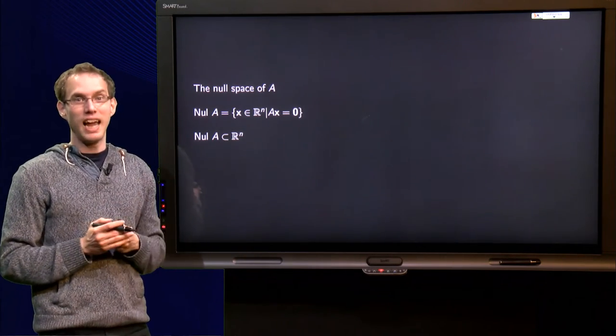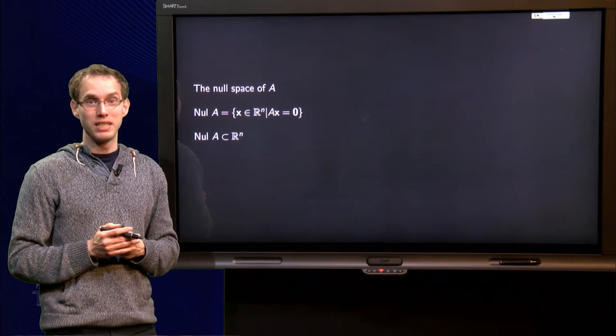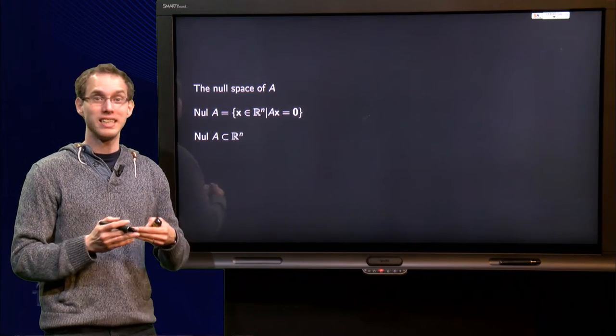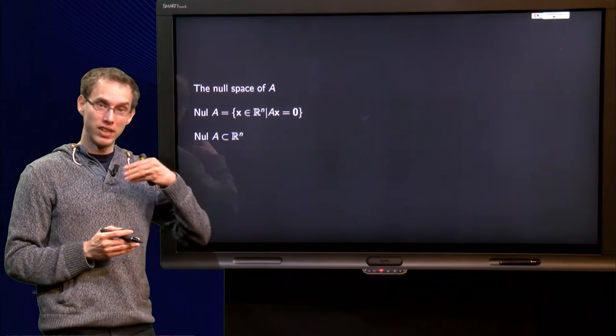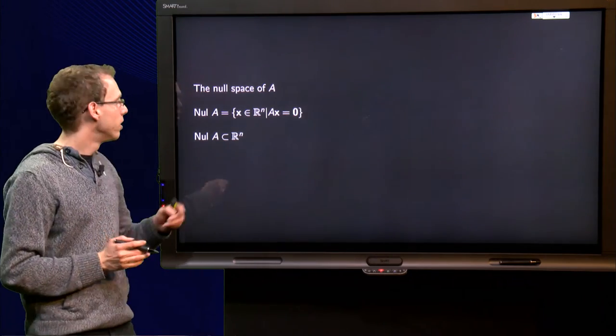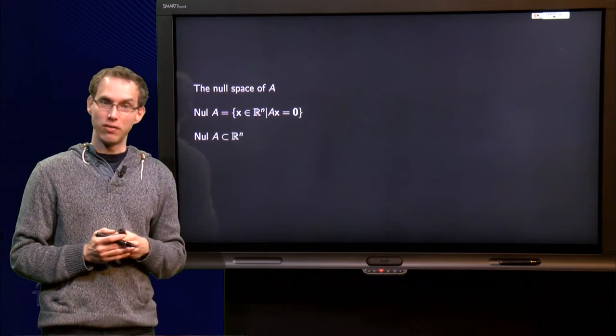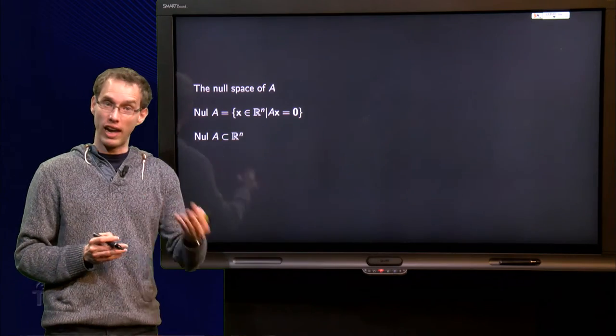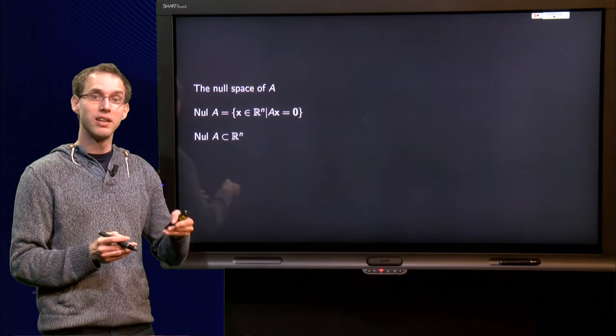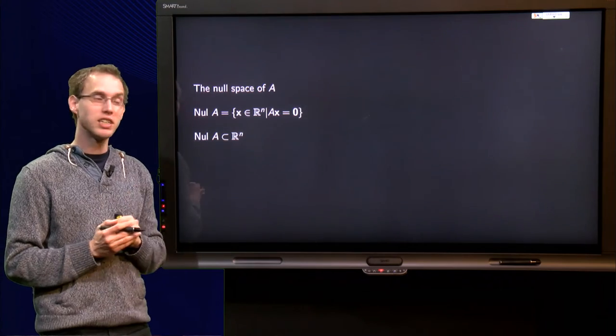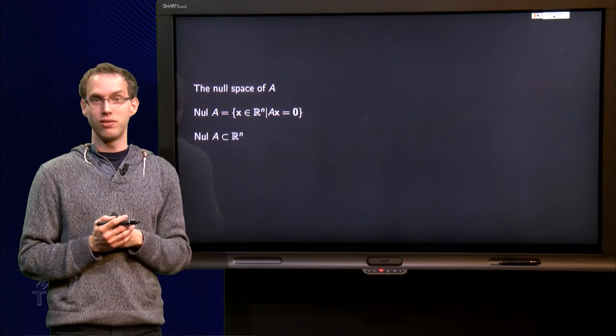Suppose we have an M times N matrix A, so what is the null space? Well, it is a set of vectors X which satisfy the equation A times X equals zero. So, null A is a set of vectors X which have to be in R^n, because you have to be able to compute A times X and A is an M times N matrix, such that A times X equals zero.